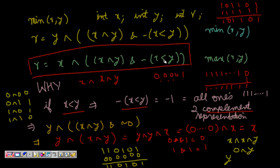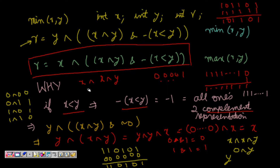So when x is less than y, the full expression evaluates as follows: the AND part gives (x XOR y), and then the outer expression becomes y XOR (x XOR y), which simplifies to y XOR y XOR x = 0 XOR x = x. So when x is less than y, we correctly get x as the minimum.